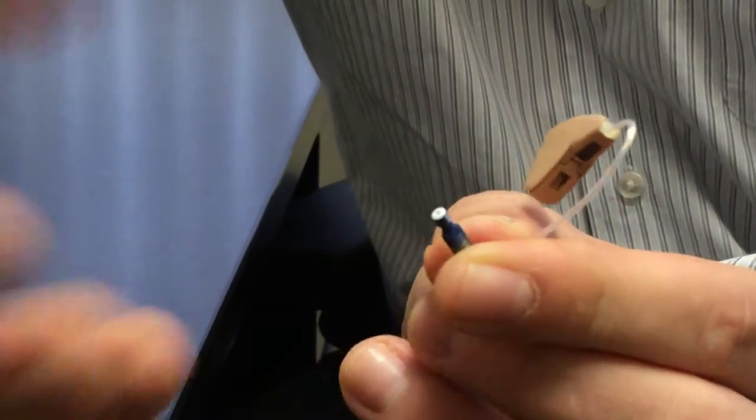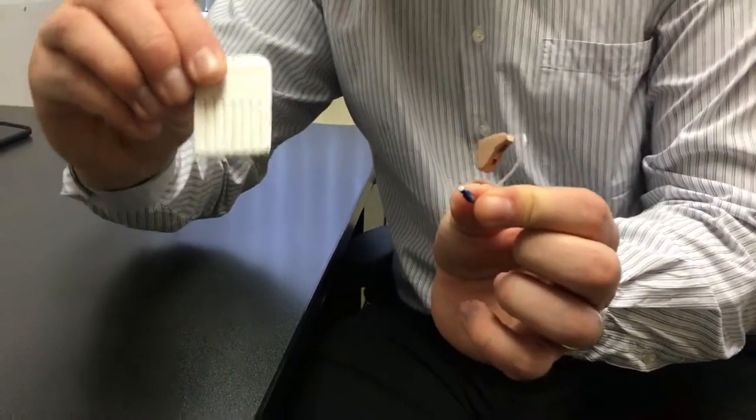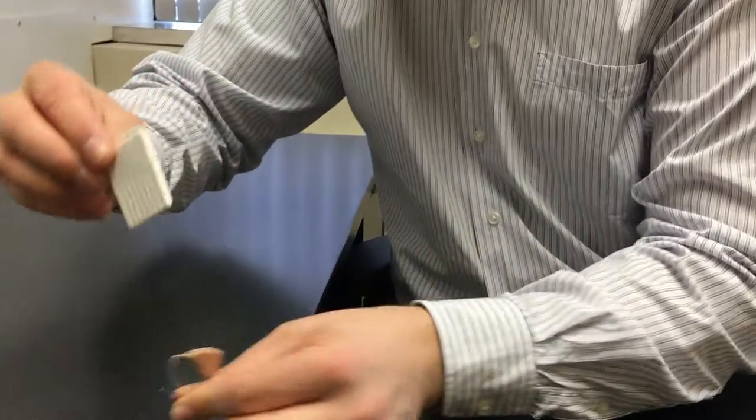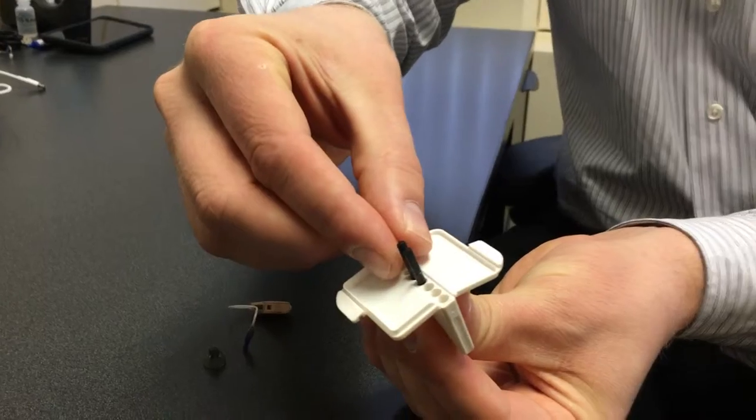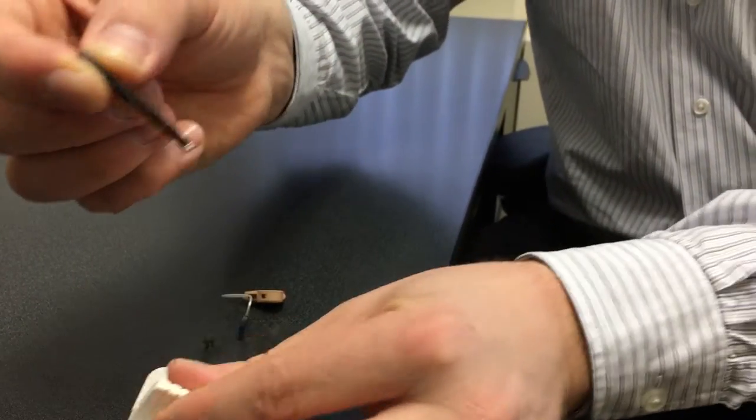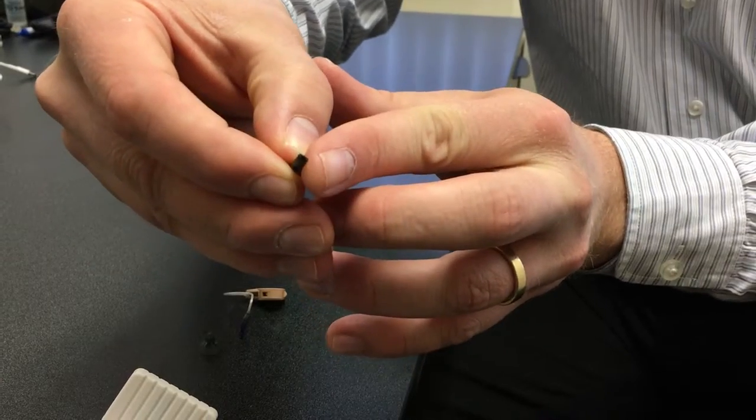So eventually it just needs to be changed and it's very simple. There are some extra wax guards, you should have some in your kit. Simply open up the case like so. Inside are some fresh filters. It's a little stick. On one end is the fresh filter, on the other end is the removal tool.